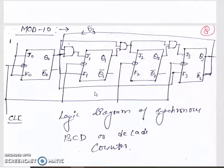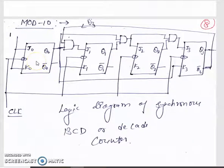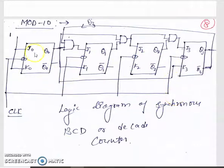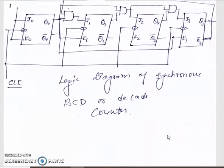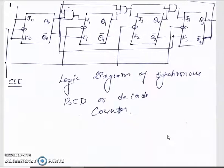The last step is the logic diagram for the mod 10 / decade / BCD counter. We have 4 flip-flops and it is a synchronous counter, so the clock is given to all flip-flops simultaneously. J0 = 1 and K0 = 1 as found from the K-map, and the other inputs for the remaining flip-flops are connected accordingly. This is a very important design, asked many times in examinations.